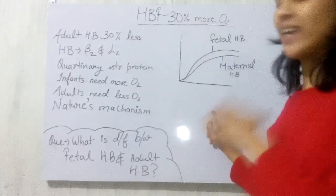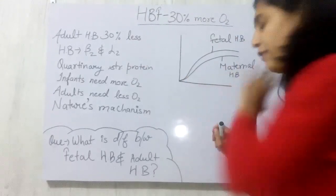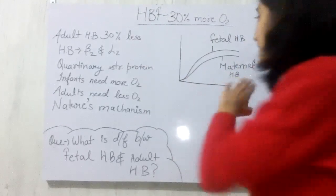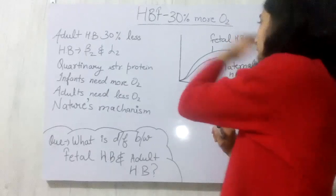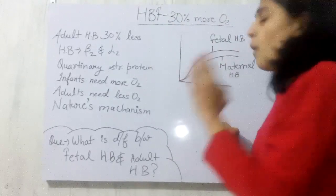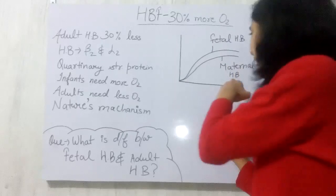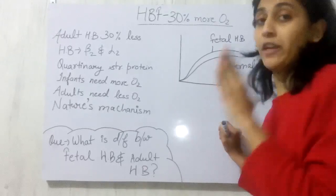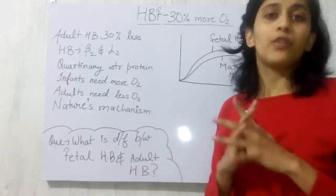Right now you can clearly see here the fetal one is on the left side, means having more oxygen affinity, fetal HB, while the maternal HB is on the right side, means having less oxygen affinity by 30 percent. So this is the answer of today's question of mine.